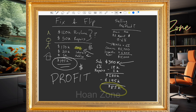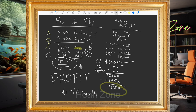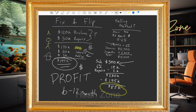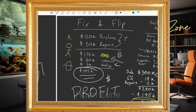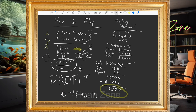The fix and flipper might have been in the deal for 6 to 12 months, whereas the wholesaler did it in two weeks. So you got $20,000 in two weeks versus $85,000 in 6 to 12 months, with a whole bunch of risk — market changes, repair overruns, maybe a private money lender wants $25,000 or $30,000 instead. You really have to figure out where your comfort zone is.